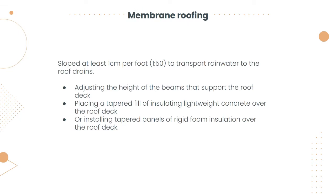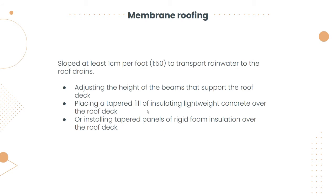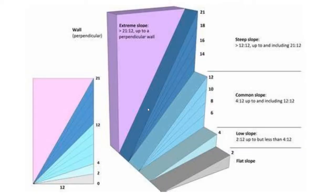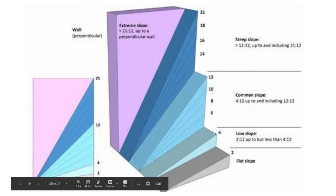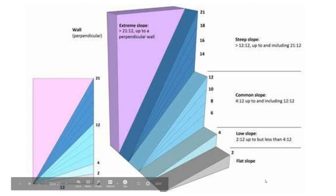For the membrane roofing slope, it must be sloped at least 1 cm per foot to transport rainwater to the roof drains by adjusting the height of the beams that support the roof deck, placing a tapered field of insulating lightweight concrete over the roof deck, or installing tapered panels of rigid foam insulation over the roof deck. There are different slope levels: flat slope, low slope, common slope, steep slope, and extreme slope. Concrete roof systems are generally flat slope, but it depends on the requirements of the building.